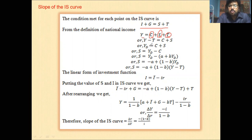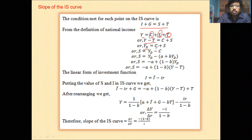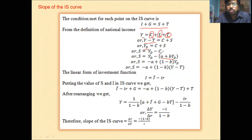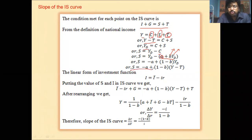So Y minus T equals C plus S. Y minus T is disposable income, replaced by Yd. So Yd equals C plus S. After rearranging, S equals Yd minus C, and S equals Yd minus (a plus b·Yd). After rearranging we get the savings equation: S equals minus a plus (1 minus b)·Yd.